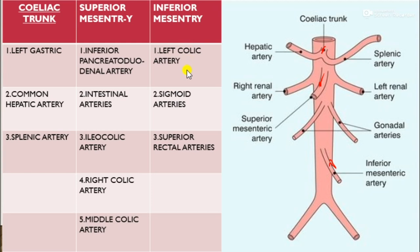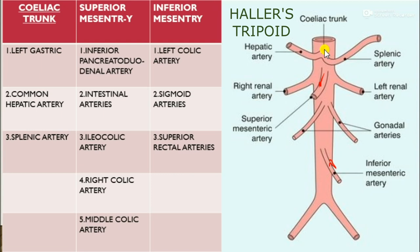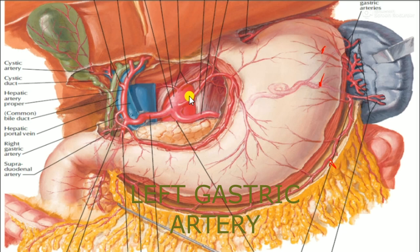The celiac trunk arises from the upper portion of the abdominal aorta at the level of T12. It appears as a thick but short vessel and gives three branches, sometimes known as the hallowed tripod. First we need to study the left gastric artery.